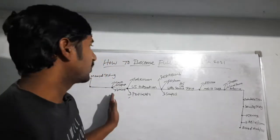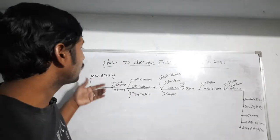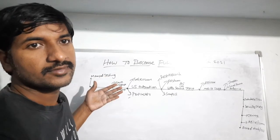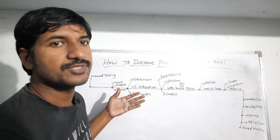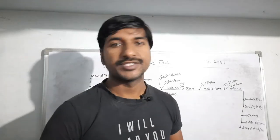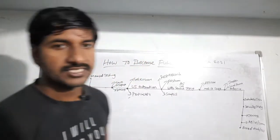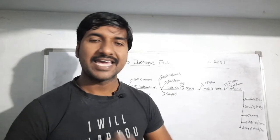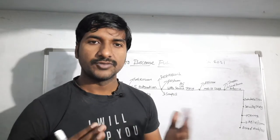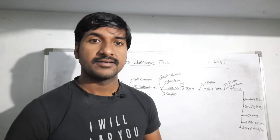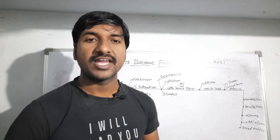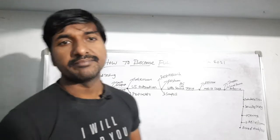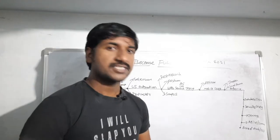To become a full stack automation testing engineer you must follow this process. First, you have to learn the basic software testing concepts - that is manual testing. Without knowing manual testing basic concepts you cannot become a full stack automation QA engineer. You should know concepts like why software testing is required, regression testing, sanity testing, smoke testing, testing strategies, testing methodologies, boundary value analysis, and different types of testing.